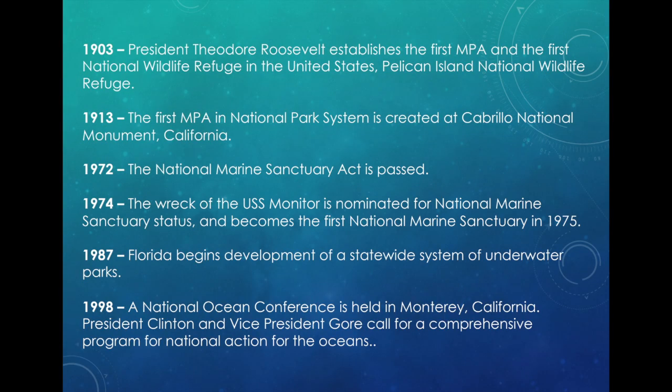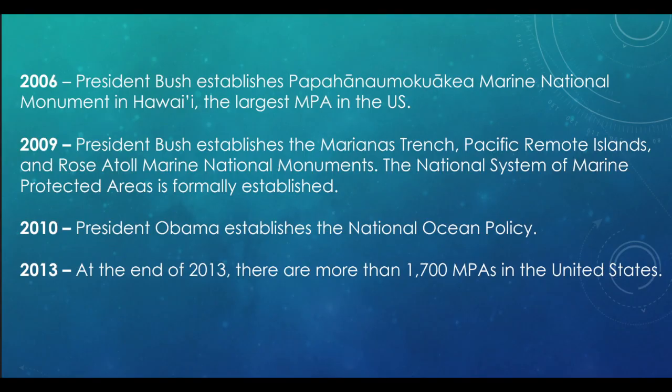There are about 1,700 MPAs in the United States, and that's only about 41% of the nation's marine waters. Still, 1,700 MPAs is actually a good amount. In 1972, we passed the Marine Protection Research and Sanctuaries Act, created by U.S. Congress and signed by President Nixon, which gave us the power to create marine sanctuaries.